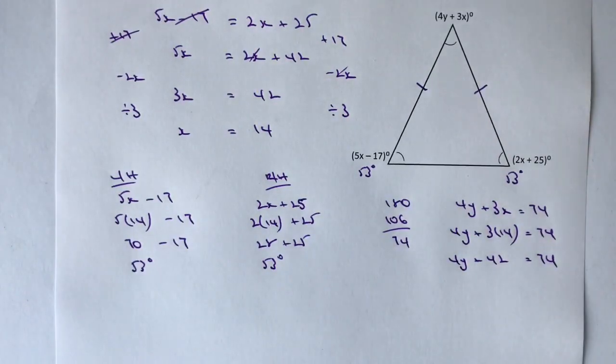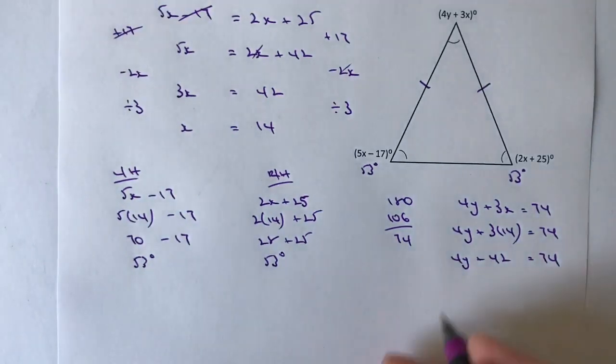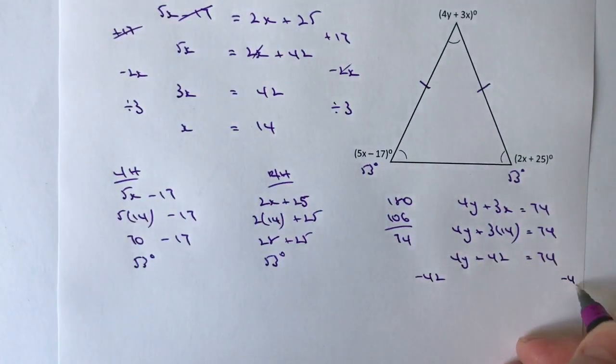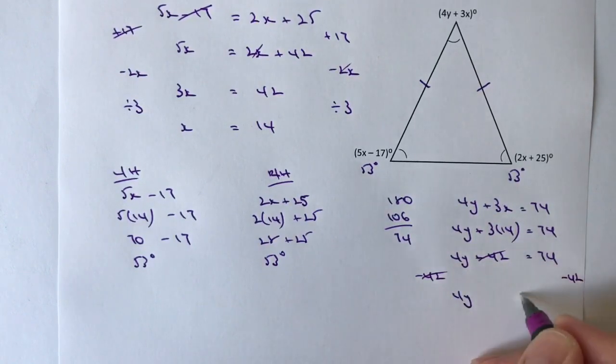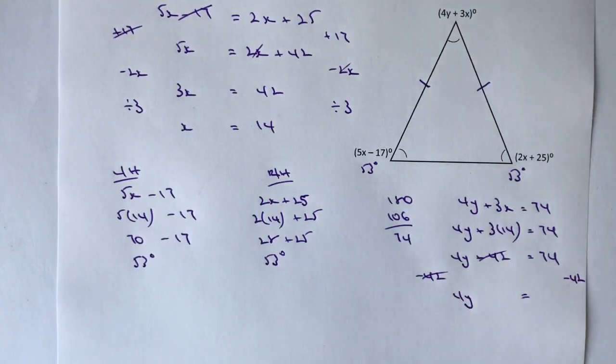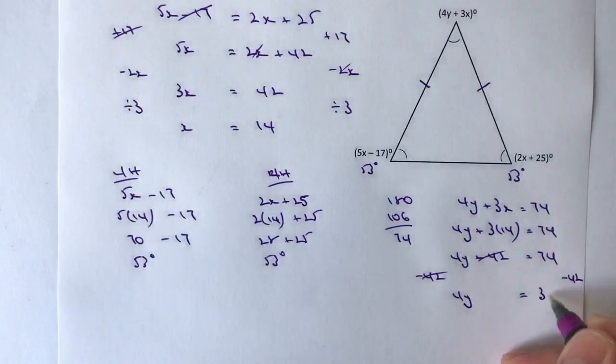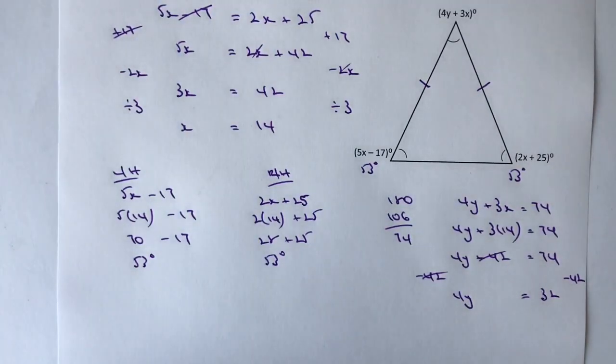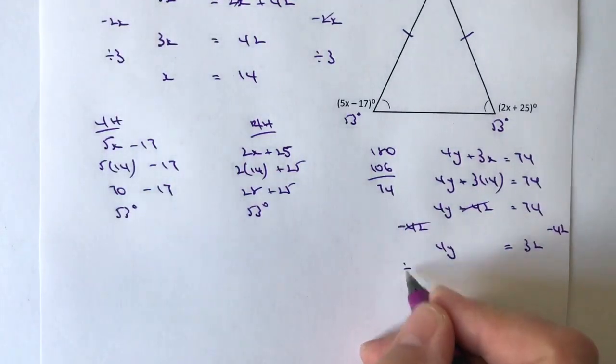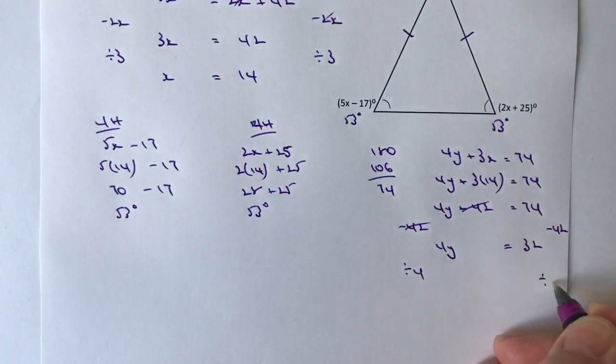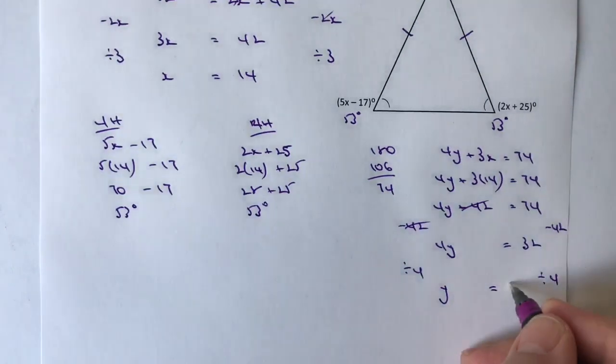I'm going to do my normal algebra as I work this through. I'll minus 42 from both sides. If I do that, I get 4y equals 32 because those cancel. Then I divide through by 4 on both sides, and I get y equals 32 divided by 4, which is 8.